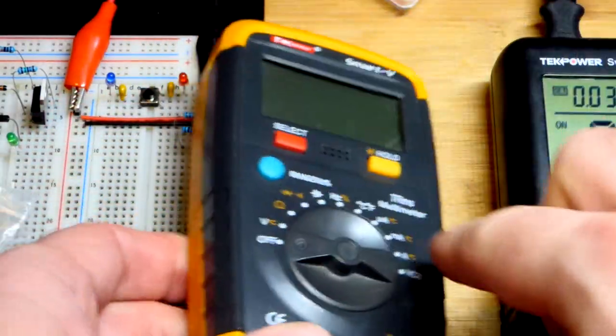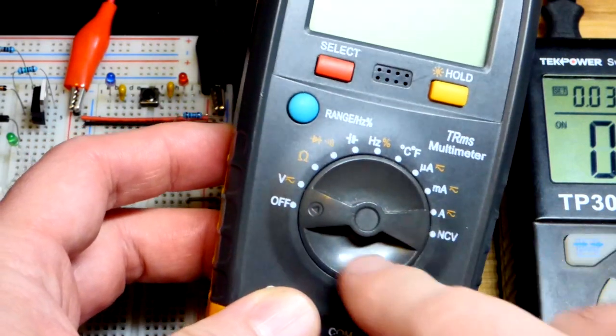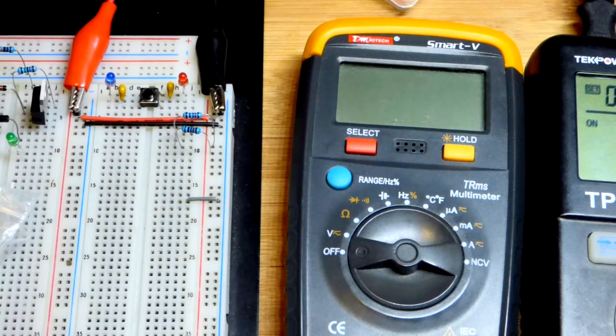Make sure you turn the multimeter off when you're done. Definitely get it off of measuring current if there's a power button. And check out one of the other videos that I'm posting.